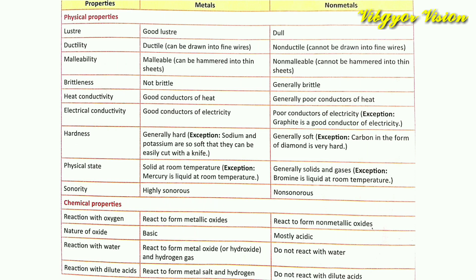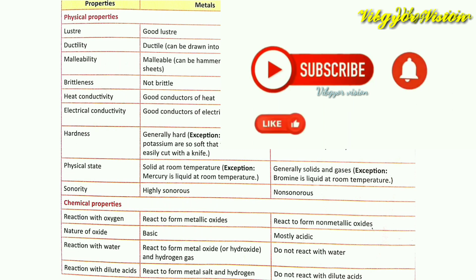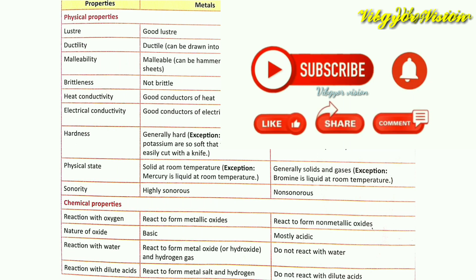Next chemical property is reaction with water. Metals react with water to form metal oxide or metal hydroxide and hydrogen gas. Non-metals usually do not react with water. Next is reaction with dilute acids: metals react to form salt and hydrogen gas, while non-metals usually do not react with dilute acids. These are the comparisons of properties of metals and non-metals.